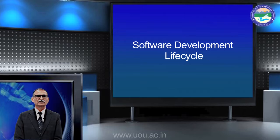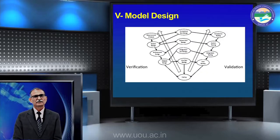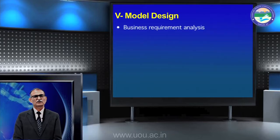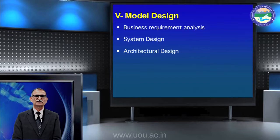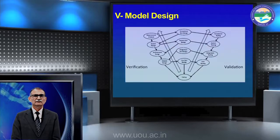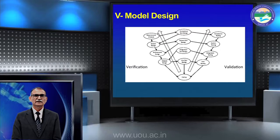The next model is the V model of software design. In the V model there are three stages: Verification, Coding, and Validation. In these three stages we have sub-stages such as analyzing the business requirement, system design covering architecture, database, programming language, and information flow including data flow. On this basis we have a module design, requirement analysis, requirement analysis design, and coding.